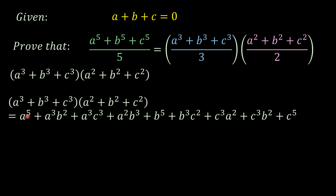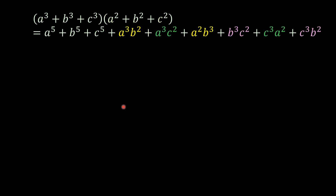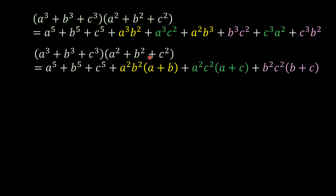So now I'm just going to rearrange here — a to the 5, b to the 5 and c to the 5 — I'm going to write them in the beginning. And so we have this one here. And then from here, what I'm going to do is factor up this term here according to the colors I highlighted them. So now we're going to have this one here.